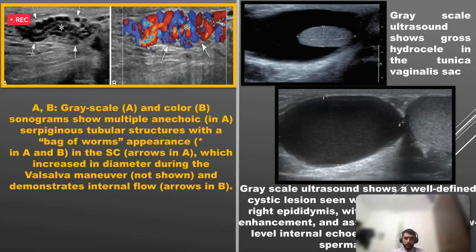The next image shows a varicocele: greyscale and Color Doppler imaging reveal dilated anechoic tubular structures, and on clinical examination it has a bag-of-worms appearance. Varicocele commonly occurs on the left side because the left testicular vein drains into the renal vein at a 90-degree angle. If seen on the right side in isolation, it should raise suspicion of an intra-abdominal mass. Systemic conditions like liver cirrhosis can also lead to varicocele, and it is the most common cause of male infertility.